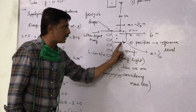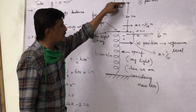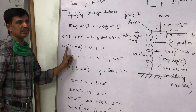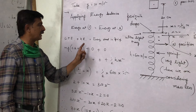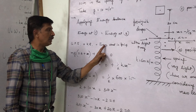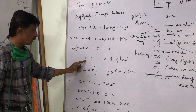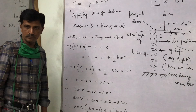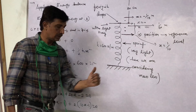Here we have 3 kinds of energies: gravitational potential energy (GPE), kinetic energy, and energy stored in the spring. At position 1, considering position 2 as the reference level, the height of the block is 20 cm plus x, so GPE is mg times (0.2 + x). Kinetic energy is 0 (released from rest), and spring energy is also 0 since the spring is not compressed.